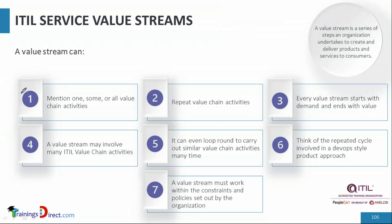A value stream can mention one, some, or all value chain activities. The value chain activities include: engage, plan, improve, obtain, build, design, transition, deliver, and support — these are the six service value chain activities. A single value stream to create a new product or service may use either all of those activities or just a few. Creating a new service may use three or four of those six activities, while providing support to the user may use two, three, four, or five — there's a difference in how each value stream uses a subset of those six activities.